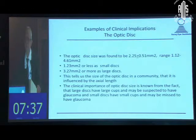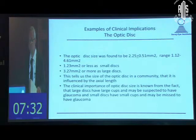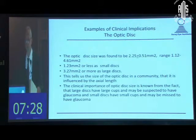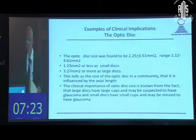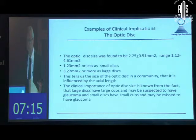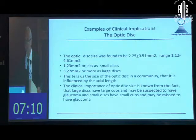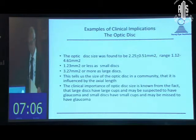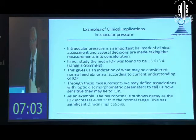As an example of clinical translational research, the mean optic disc size was found to be 2.25 square millimeters. We were able to define a small optic disc as 1.23 square millimeters or less, and a large optic disc as 3.27 square millimeters or more. The importance of optic disc size in a community lies in the fact that large discs have large cups and may be suspected to have glaucoma, while small discs have small cups and glaucoma may be missed.